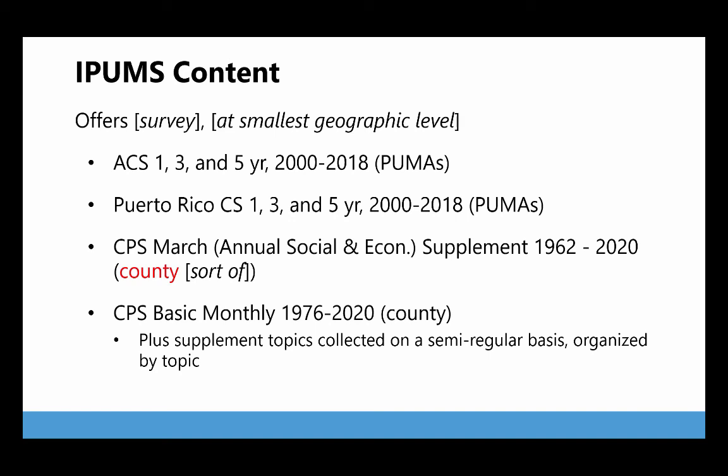IPUMS goes down to the county level for the March supplement data, but that's misleading. The Current Population Survey is designed to be used at the state level, so going to the county level is dicey. And because this is PUMS data, a lot of those county-level data are suppressed to protect confidentiality. The rate is actually 55% - there are only 55% of counties in the March supplement data, so it's not a reliable thing. You won't be able to get data for all counties.